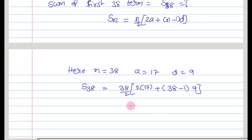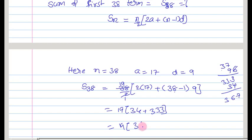On doing so, 2 into 1 is 2, we get 19 of 34 plus 37 times 9. 37 times 9, what is 37 times 9? 63, 6 carries 27, 33, that is 333. Now 33 plus 34, what do you get? 367.